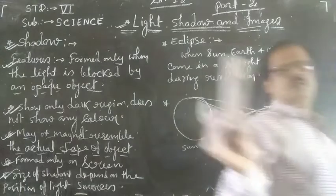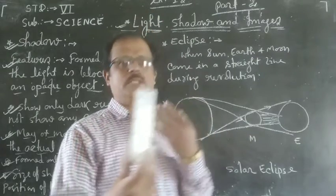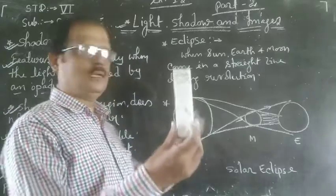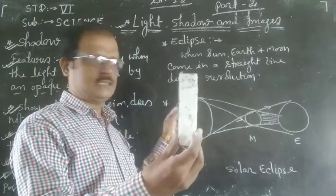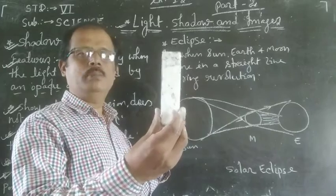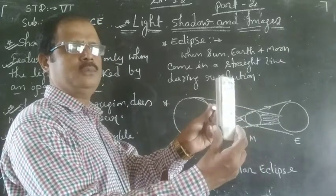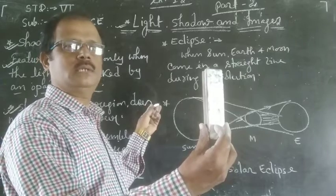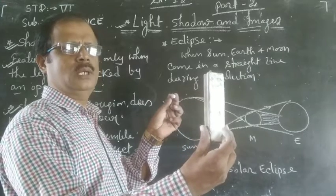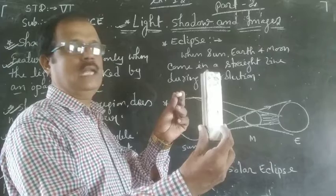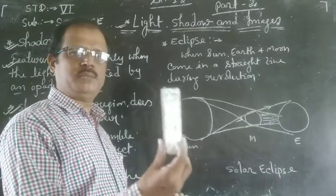Suppose this is a duster — an opaque object — and this is a torch. When we increase the distance between the torch and the duster, the shadow becomes smaller and smaller. When we move the light source far from the opaque object, the shadow gets smaller. When we bring the light source near the opaque object, the shadow starts increasing and becomes larger and larger. So the size of the shadow depends on the position of the light source.